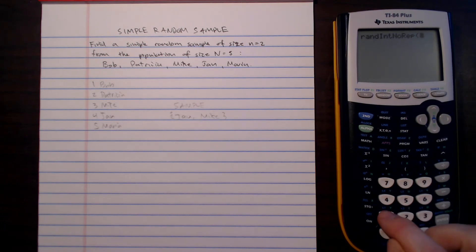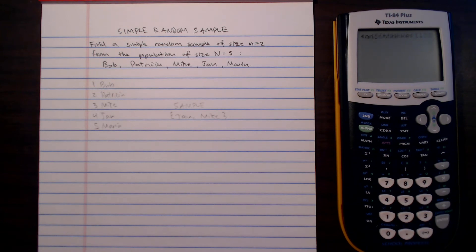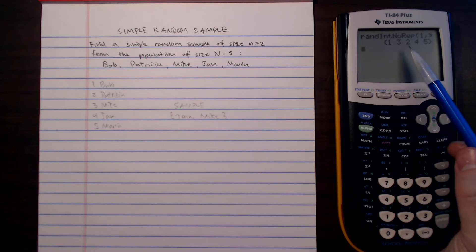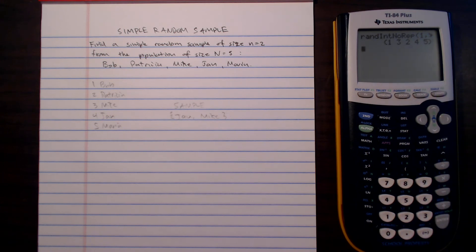This function will reorder the list of numbers from one to five when I enter one comma five. Notice it has now given me another reordering. It's almost the original ordering, it has simply swapped the second and third entry.